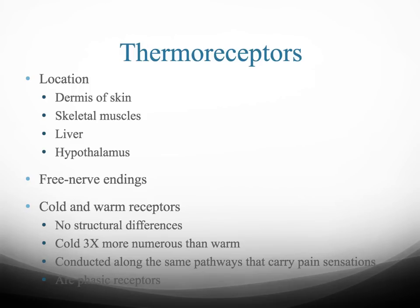Now we're going to talk about thermal receptors. They're located in specific areas: the dermis of the skin, skeletal muscles, the liver, and the hypothalamus. This is a phasic receptor — that's why when you walk in from the hot, humid weather outside into a very cold classroom, you feel the coldness immediately, but after a while your body adjusts to the temperature and you don't feel as cold. That's a typical example of a phasic receptor.